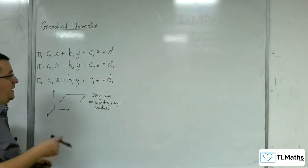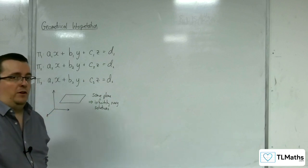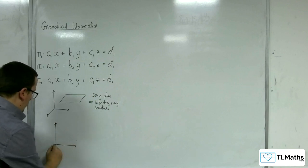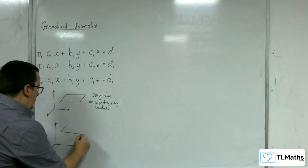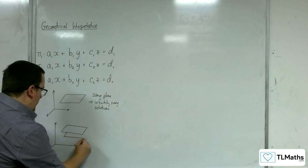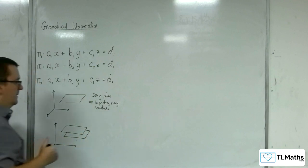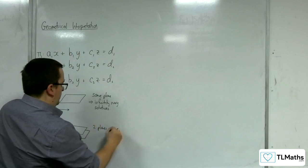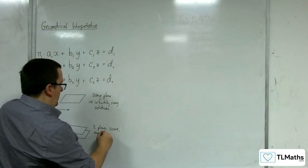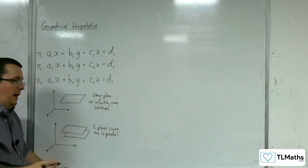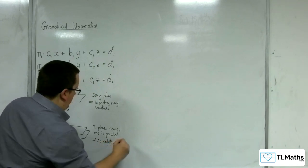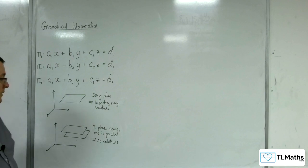We had the situation where you had two parallel planes in the two-plane situation. You could have a similar situation where two planes are the same and one is parallel. In which case, there are no solutions that solve all three, because there's no common intersection for all three. So: infinitely many solutions, or two planes are the same and one is parallel.